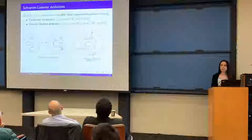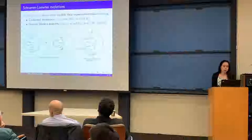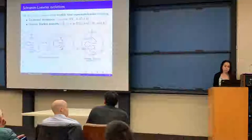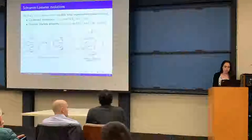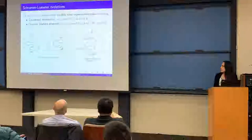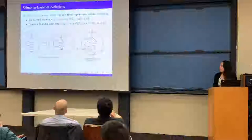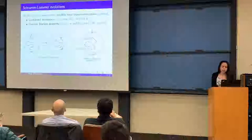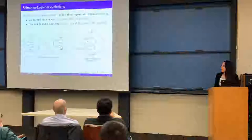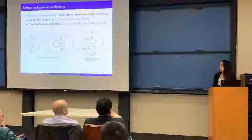We start by looking at SLE. SLE is a family of random fractal curves characterized by two properties: conformal invariance and the domain Markov property. Conformal invariance means we get an SLE in domain D̃ by starting with an SLE in domain D and applying a conformal map. Domain Markov property means that if we condition on the initial segment of the SLE curve, the law of the remainder is that of an SLE in the domain obtained by removing the initial segment.